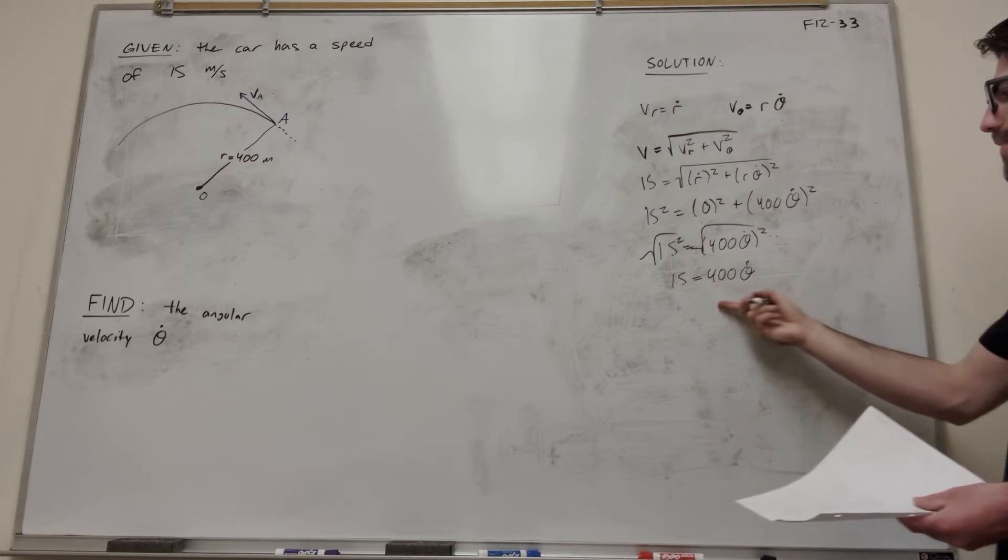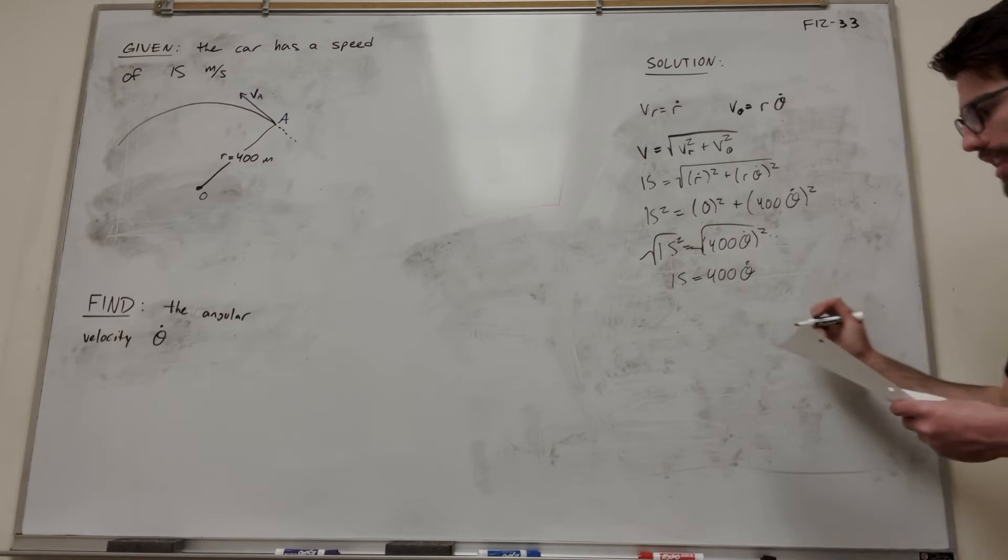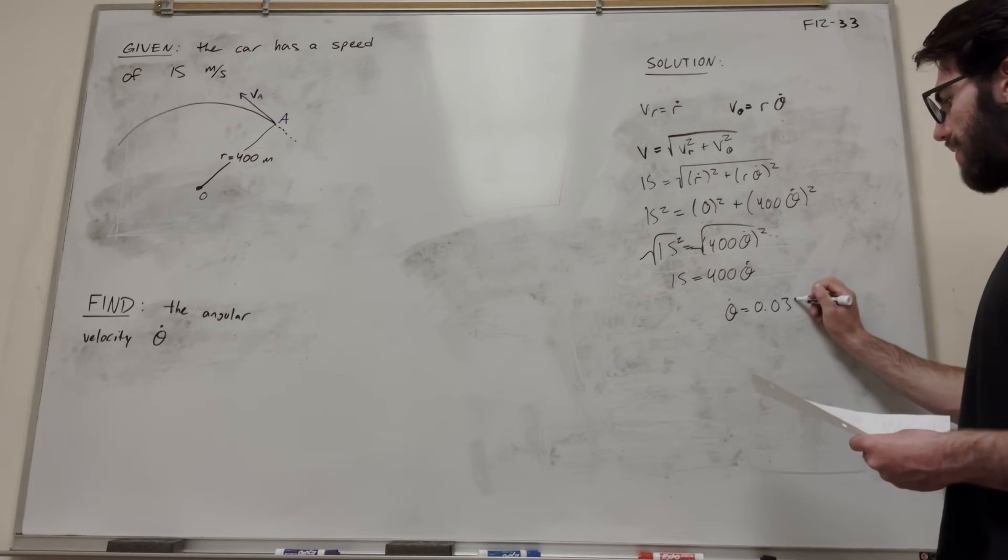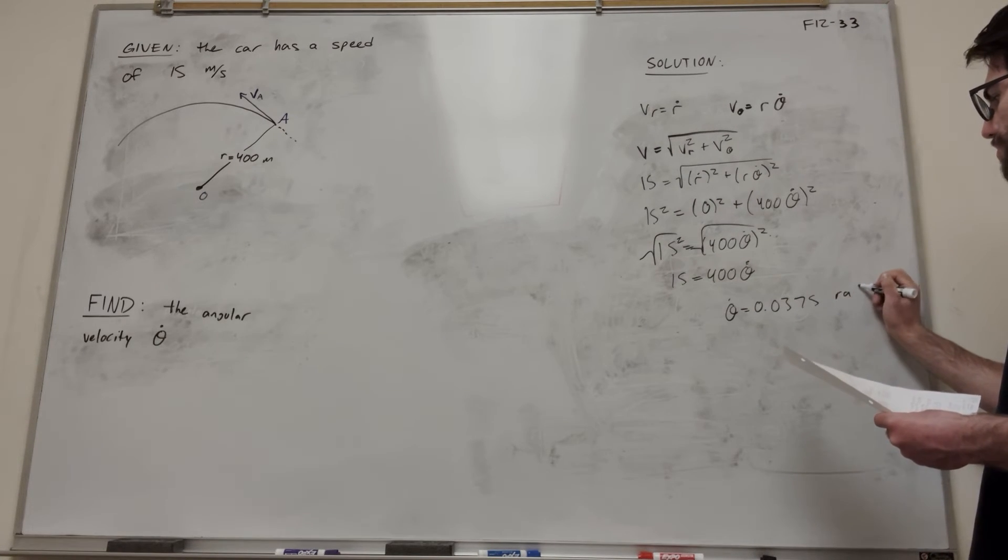And then now we just have to divide by 400, and you're going to get that theta dot equals 0.0375 radians per second.